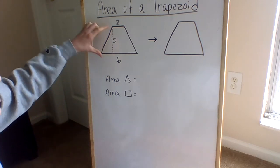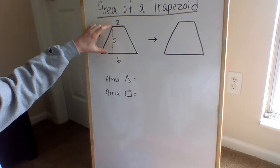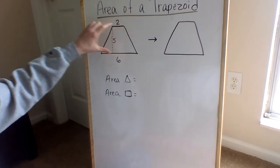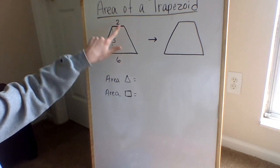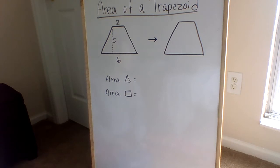So if we have a trapezoid, remember that they have one pair of parallel sides, meaning they go in the same direction, and they also have four different sides. So in order to do this, I want to break this into two different shapes. What two shapes do you think we are going to be breaking this down into?